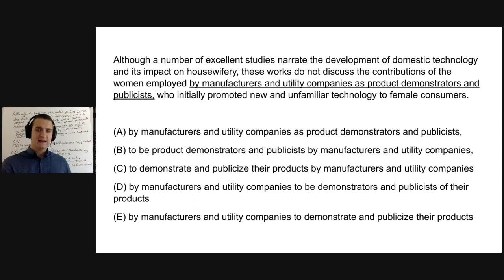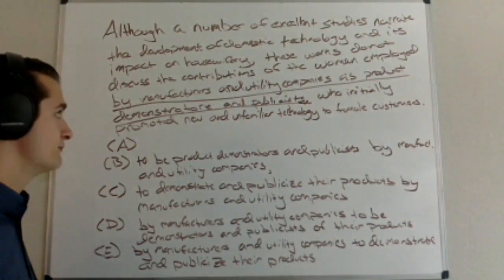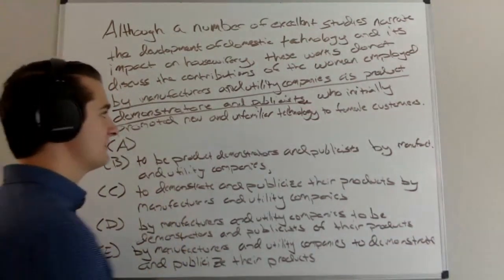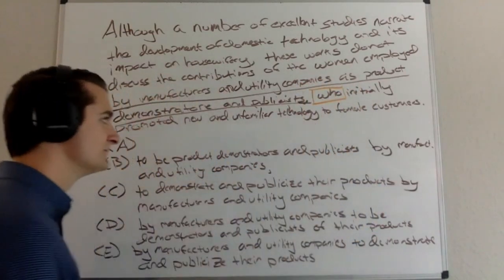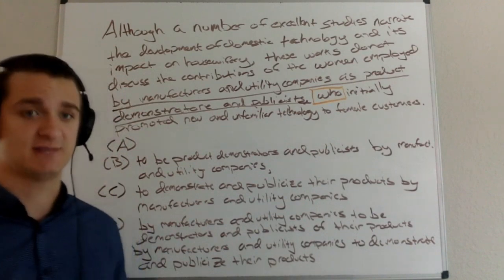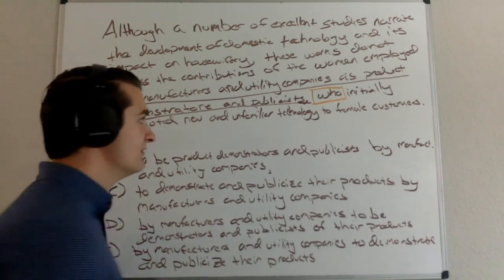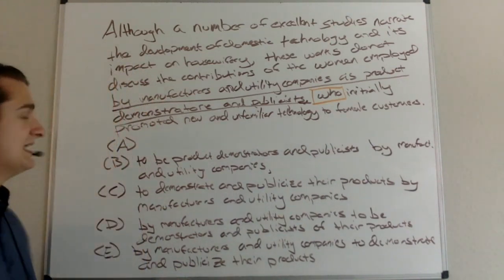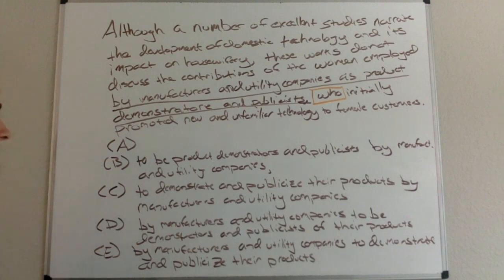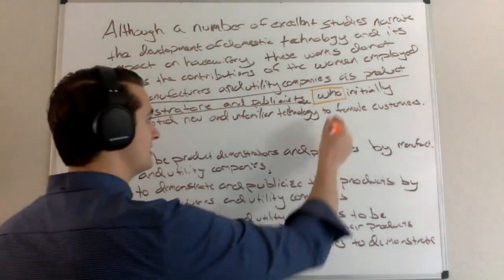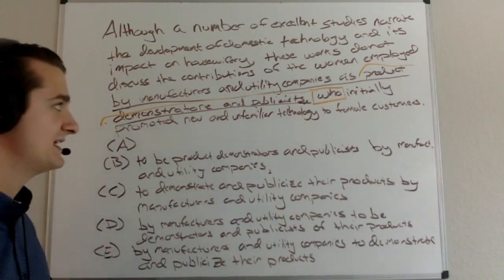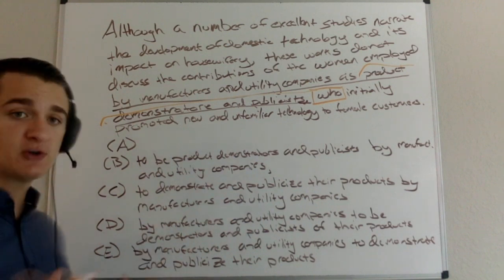Let's take a look at this one together on the board. One thing that happens is this question can be pretty intimidating until you notice something right after the underlined portion — the word 'who.' This word 'who' is functioning as a modifier. I'm going to look for something reasonably close to 'who' that it could modify. The sentence has 'women employed by manufacturers and utility companies as product demonstrators and publicists who initially promoted' — so who are the people who initially promoted? The product demonstrators and the publicists. So right now I don't have a problem with A.